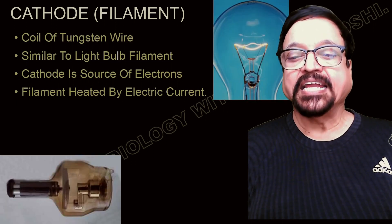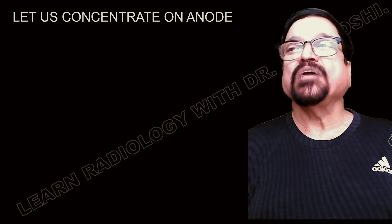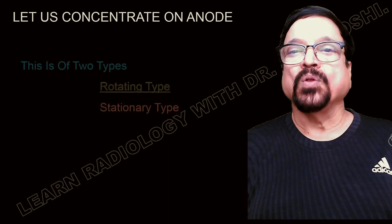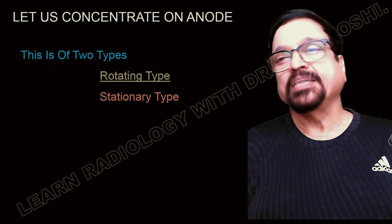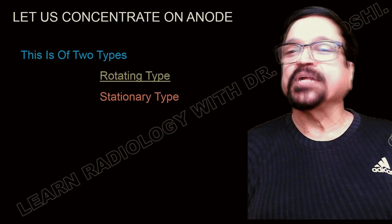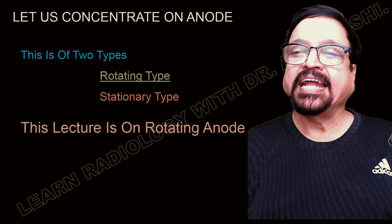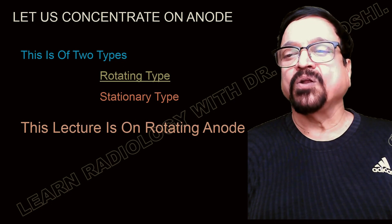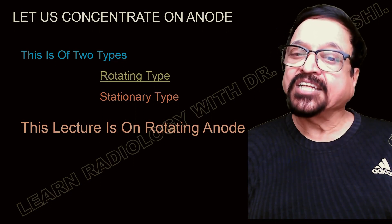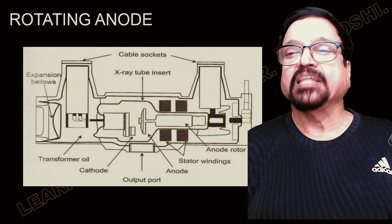Now let us concentrate on the anode only. There are two types of anodes: one is called the rotating type and the second is called the stationary type. As the name indicates, they are either stationary or rotating. Today's lecture is on the rotating anode, so we will be concentrating on rotating anode only.